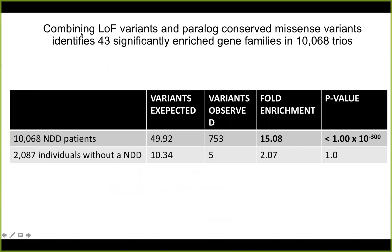Since we are interested in discovering genes associated with disease in these trios, we can combine paralog-conserved missense variants with truncating or loss-of-function variants in the same gene families, since many truncating variants are associated with disease. Here we look at the whole gene family, and for paralog-conserved sites we reduce the search space, which gives us more power. In total, we identified 43 significantly enriched gene families in 10,000 trios — strongly enriched, where we would expect around 50 and see a 5-fold enrichment in these 43 families.